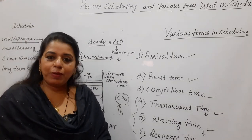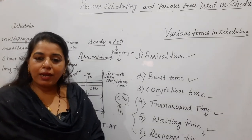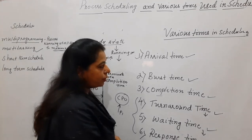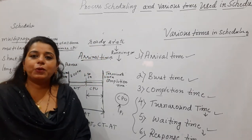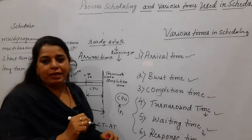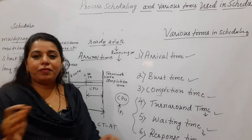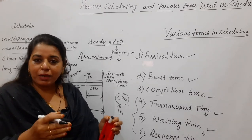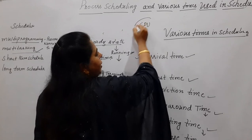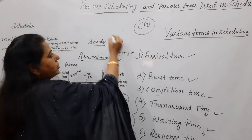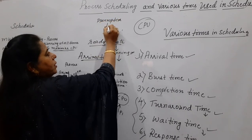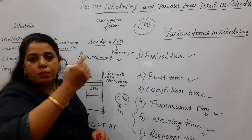The conclusion is: we want minimum waiting time, minimum turnaround time, and minimum response time, but we want maximum throughput — more processes executing per unit time. You should also know the difference between multitasking and multiprogramming. More number of processes in main memory is multiprogramming. Multitasking is the CPU carrying out more than one task at a time, because of the preemptive feature.